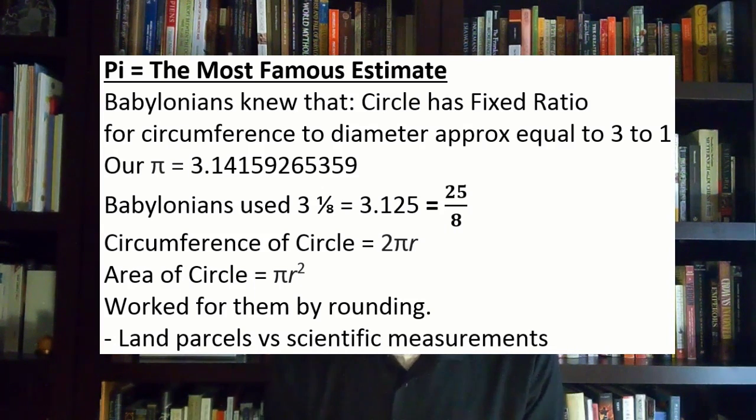They knew the calculations. A circumference of a circle would be what we call 2 pi r. They'd use the same formula. An area of circle is pi r squared. They use the same type formula. These are not scientific measurements. These are land parcels. So this was a workable estimation of reality for them.